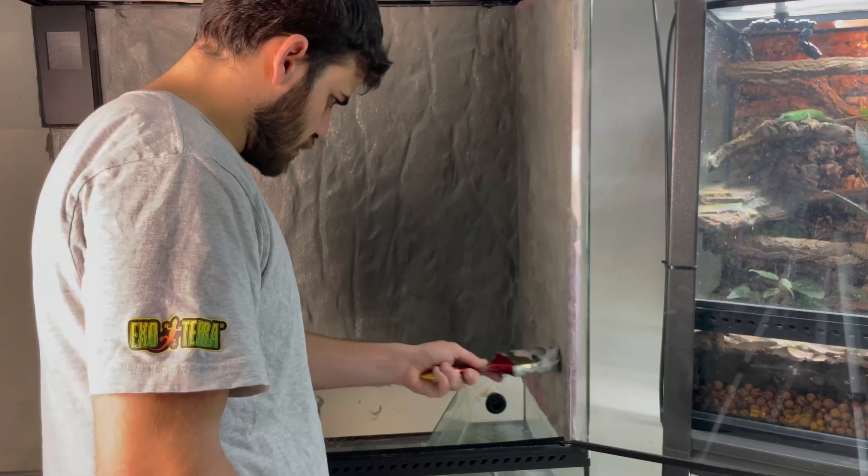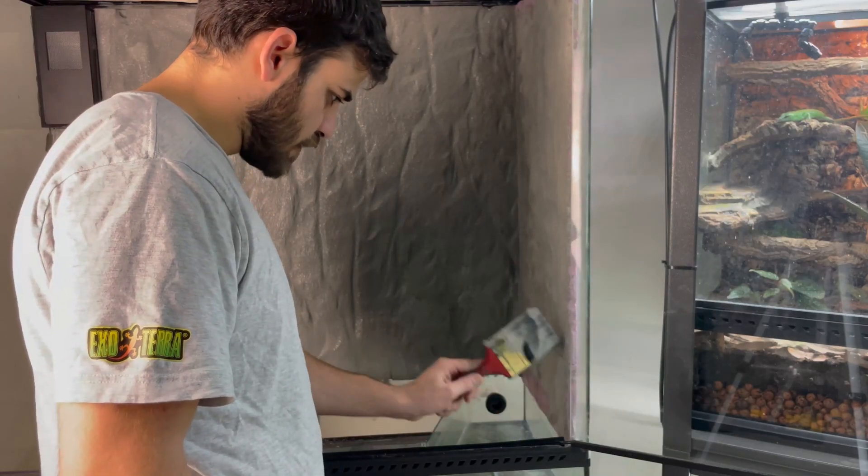We made sure all the edges were painted and cleaned up and then put silicone around the edges. This was done after putting the drylock on because drylock will not stick to silicone.